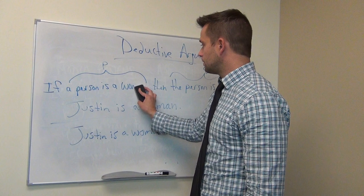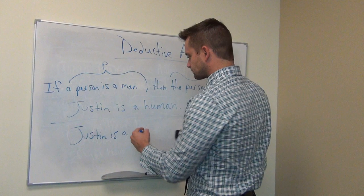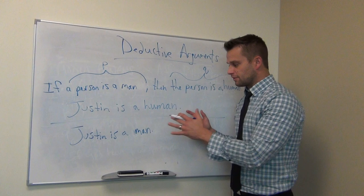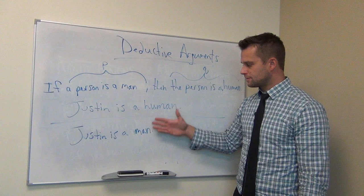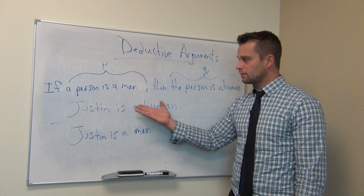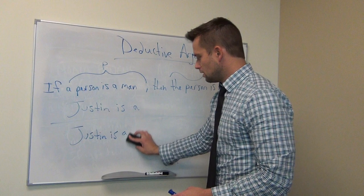Now, if we change the example: if a person is a man, then the person is a human; Justin is a human, therefore Justin is a man — this is also an invalid form because it falls within the if P then Q; Q, therefore P structure. But notice now everything is true: true premises, true conclusion. Yet it's still an invalid form. To make it valid, you'd say: Justin is a man, therefore Justin is a human — that is a valid form.